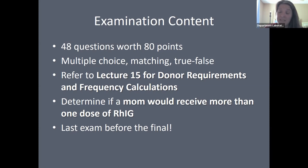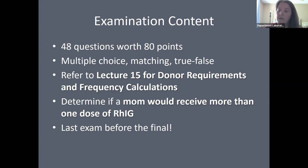When doing frequency calculations to determine the number of units that should be crossmatched, you want to use the percent of the population that is antigen negative. A common mistake is using the antigen-positive frequency. When phenotyping to honor a patient's antibody, we want that antigen-negative percent.